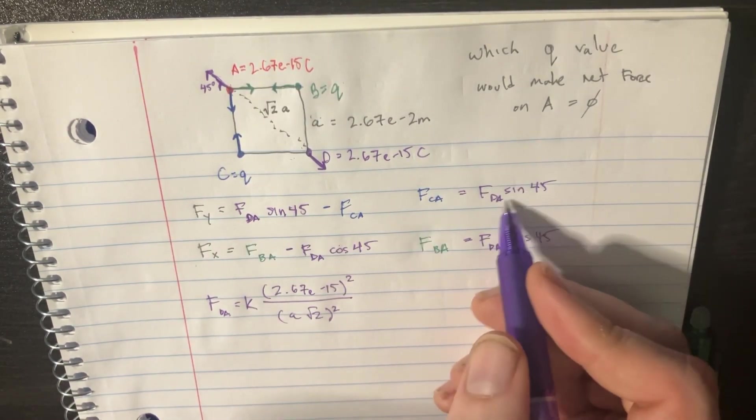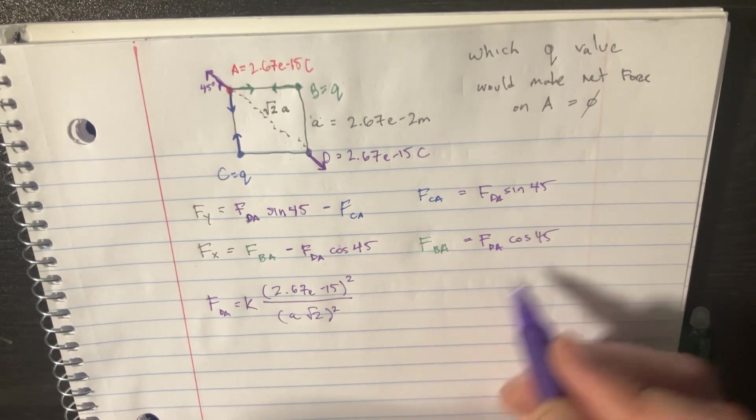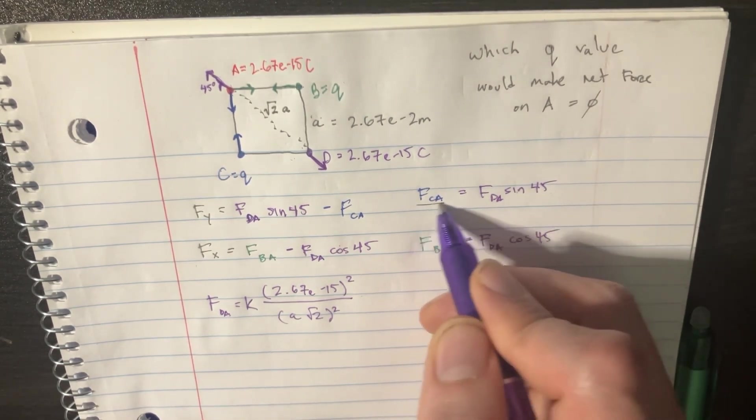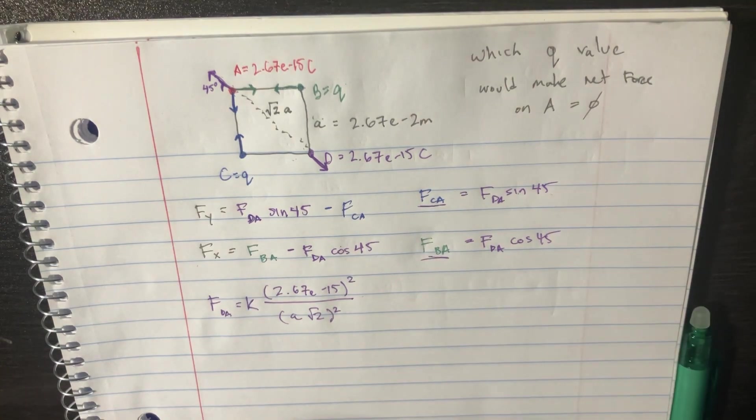but we want to know the components. So for this one, we're going to be sine 45, and that one's going to be cosine 45. That's cool. Let's also figure out what some of these are, so we can add those in.